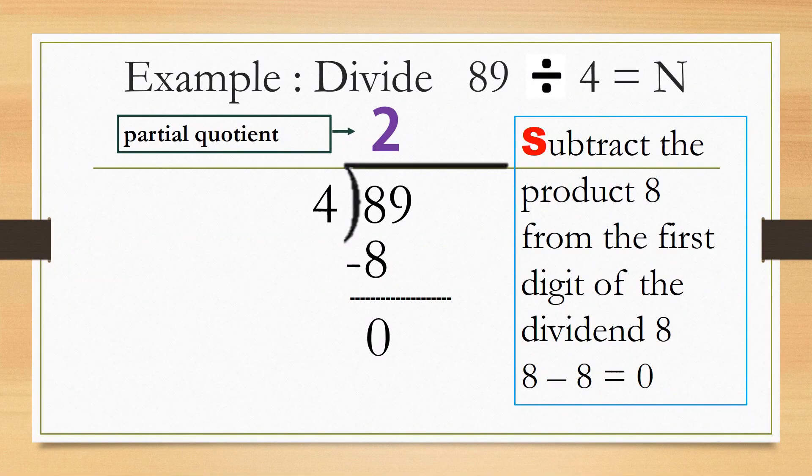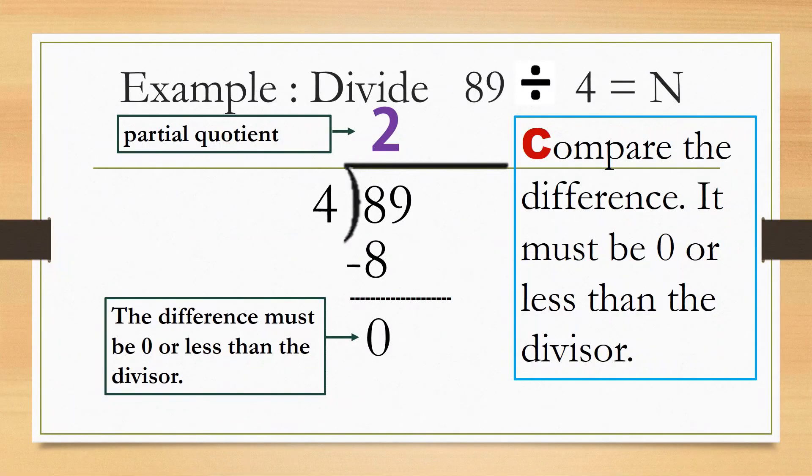Next is S — subtract the product 8 from the first digit of the dividend 8. 8 minus 8 equals 0. Next is C — compare the difference. It must be 0 or less than the divisor. The difference is 0, so we can move on.